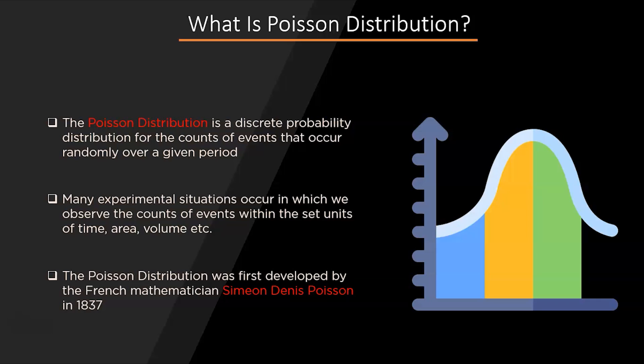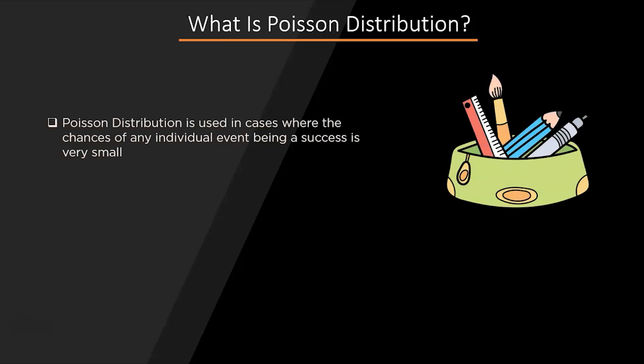The Poisson distribution was developed by French mathematician Simon Denis Poisson in 1837. A Poisson distribution is used in cases where the chances of any individual event being a success is very small.